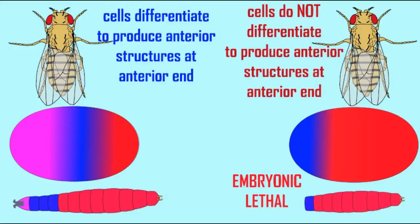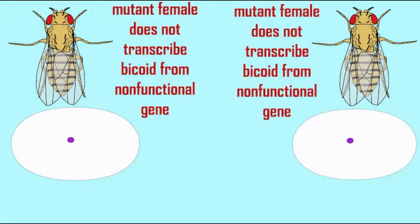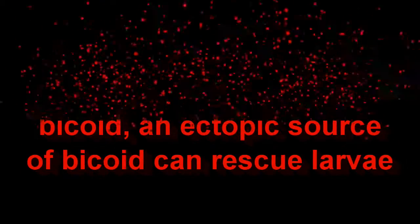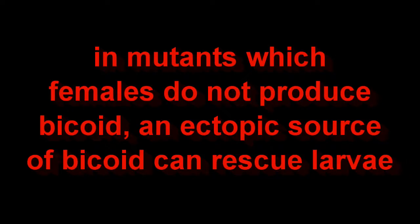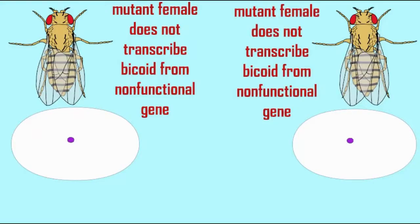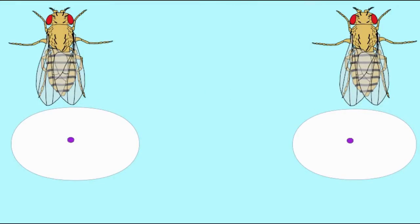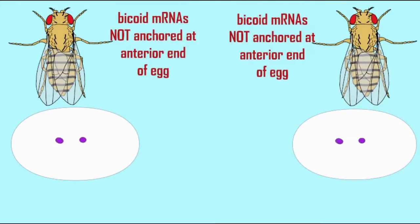The embryos simply will not survive without being able to make anterior structures. If a female does not produce the bicoid mRNAs, this will doom the embryo, which will not develop anterior head structures.